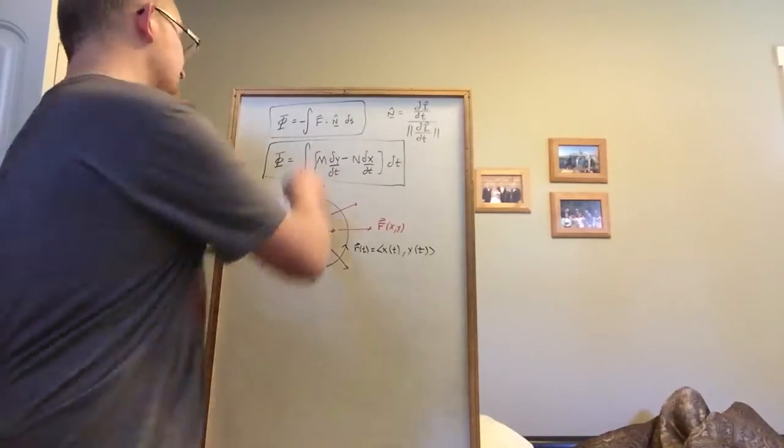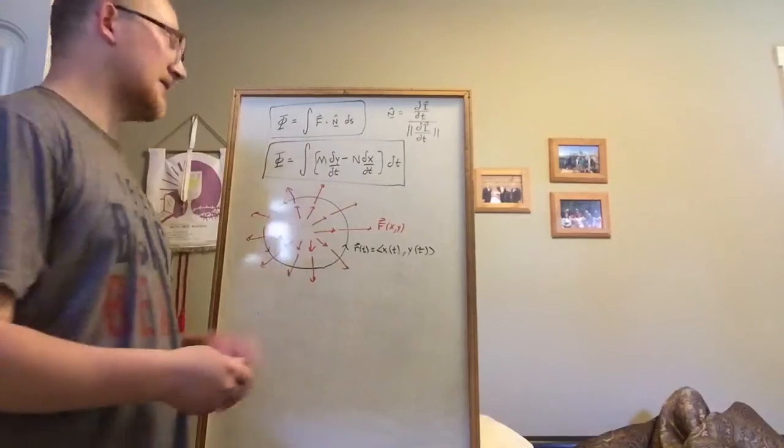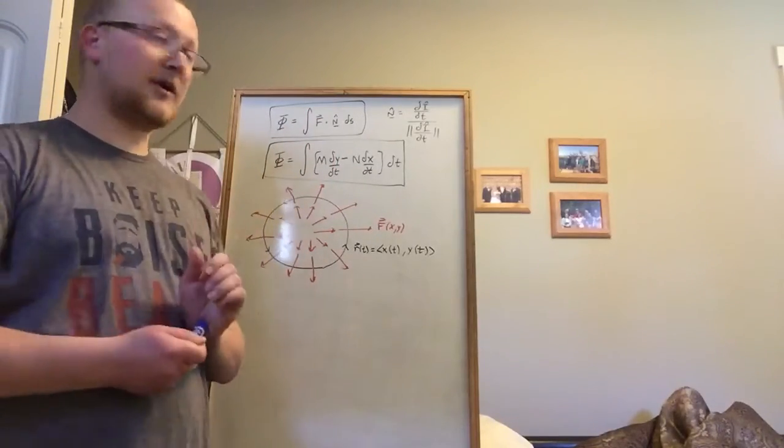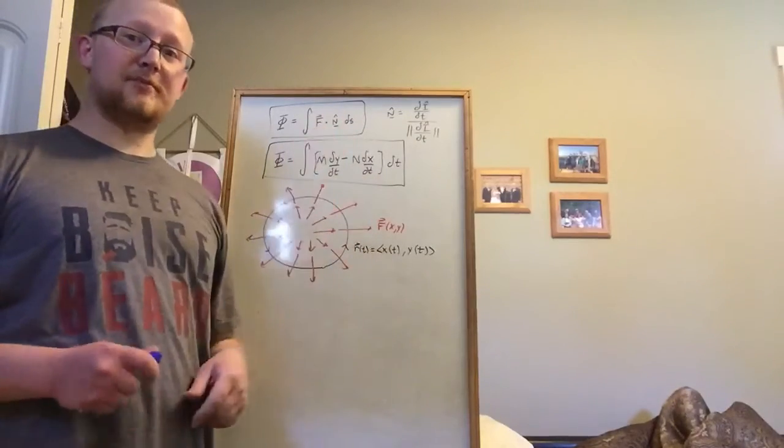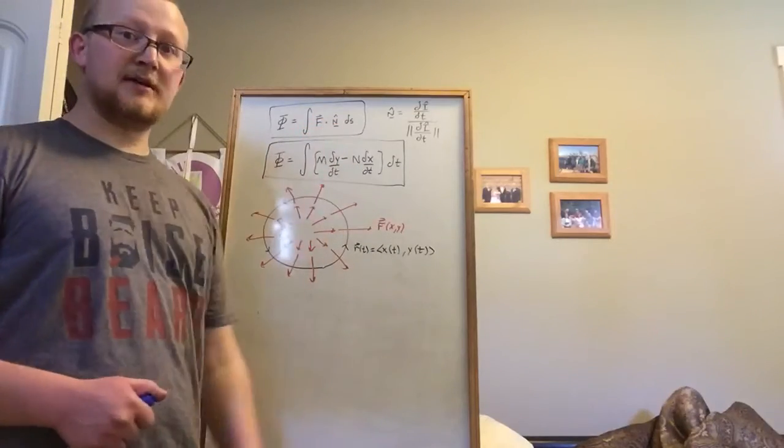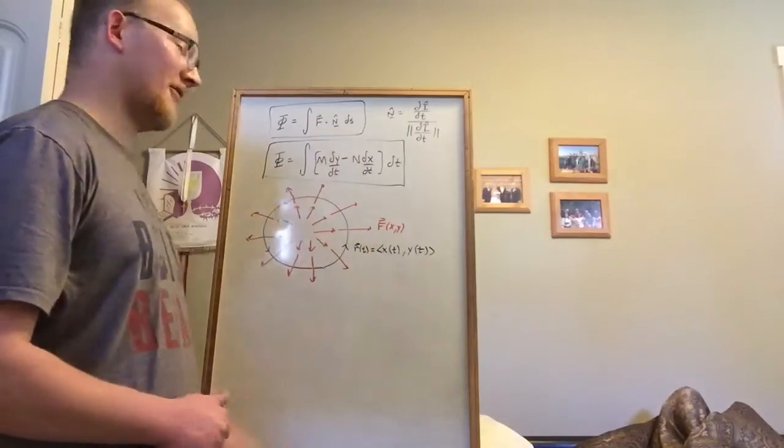and part of that is because we took this formula, f dotted with our unit normal vector of the curve times ds. We used this definition because for circulation we dotted it with the unit tangent vector, so it seemed natural that for the flux we would dot it with the unit normal vector.